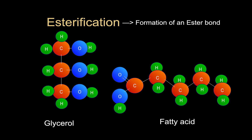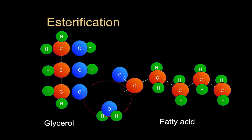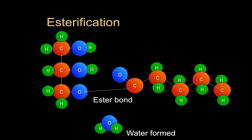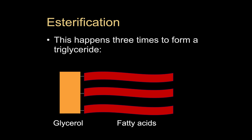To form a triglyceride we go through a process known as esterification, which is just a name for the formation of an ester bond — the bond we find in a triglyceride. Here we have the glycerol and one fatty acid; note that ultimately we'll have three fatty acids joining, but we'll show the condensation reaction with one fatty acid first. What happens is we take two hydrogens and an oxygen, which produces H₂O — water. Once the water is removed, you join the carbon on the right-hand side with the oxygen on the left-hand side, forming your ester bond. Doing this three times with three fatty acids and one glycerol gives you a triglyceride.